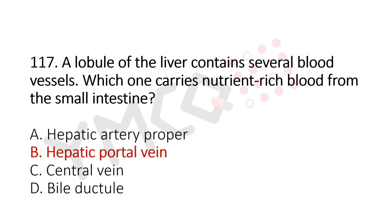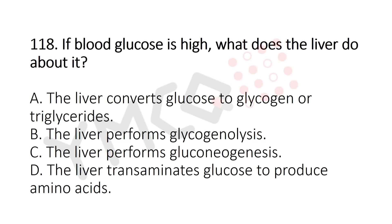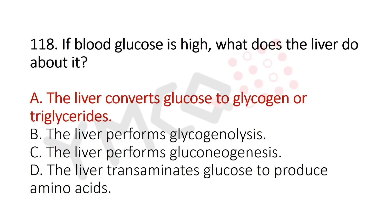Now Question 118: If blood glucose is high, what does the liver do about it? Option A: the liver converts glucose to glycogen or triglyceride, Option B: the liver performs glycogenolysis, Option C: the liver performs gluconeogenesis, Option D: the liver transaminates the glucose to produce amino acids. The answer is Option A: the liver converts glucose to glycogen or triglyceride.